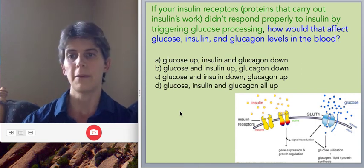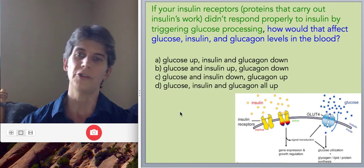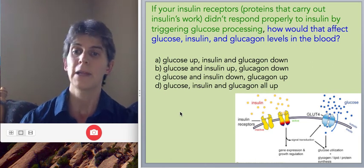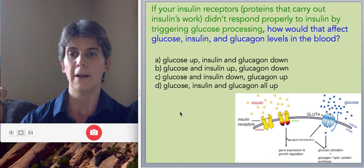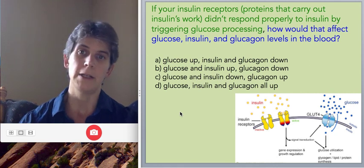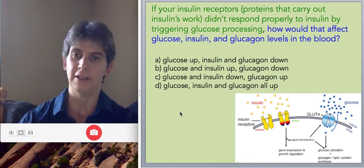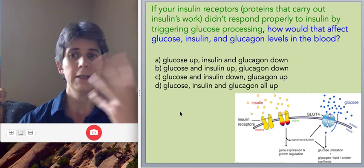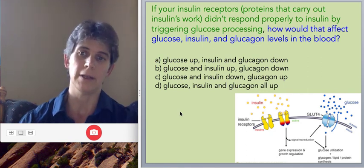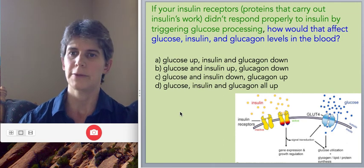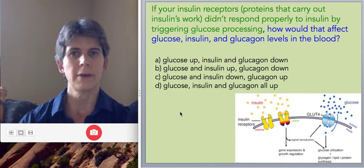And indeed, in type 2 diabetes, at least in the initial stages of type 2 diabetes, insulin levels are often very high. Sometimes the pancreas of type 2 diabetes patients gets tired out and eventually does release less insulin as it becomes desensitized and worn out. But initially, typically, insulin levels are either normal or high in these individuals. Okay, if you have questions about this, let me know!